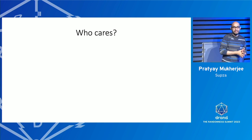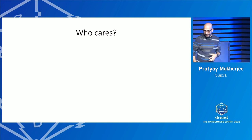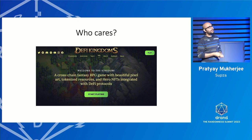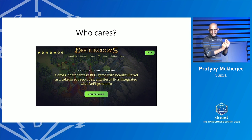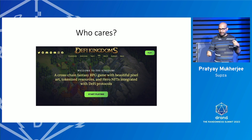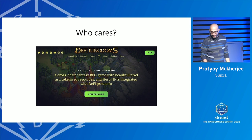As for who cares about output privacy — DeFi Kingdoms, an on-chain gaming platform, was not using VRF due to high gas costs and was unhappy that Chainlink's service required using all derived randomnesses simultaneously. What we offer with output privacy is that you get one seed, keep it hidden, and use it for the next ten rounds, reducing gas costs significantly. They are excited about it, and we actually have a client.